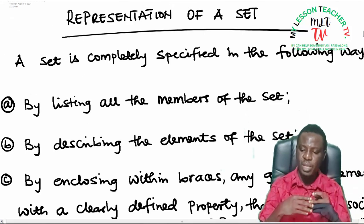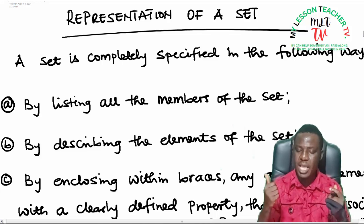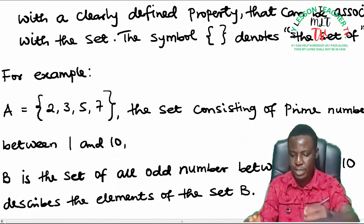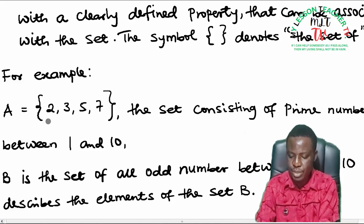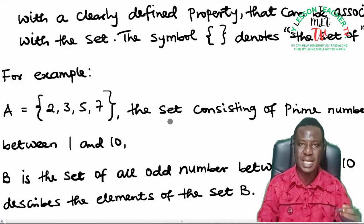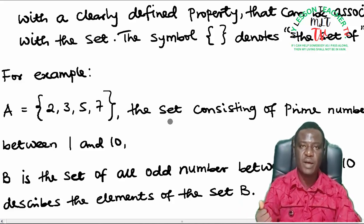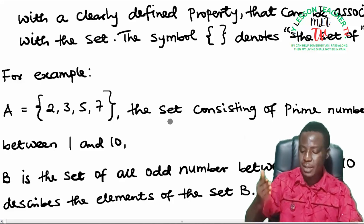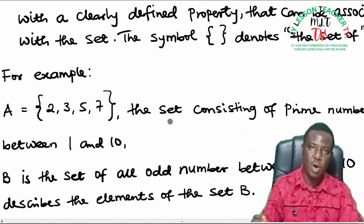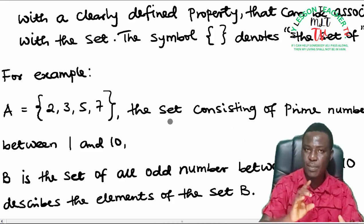On representation of a set, we said a set is completely specified in the following ways. These are ways you can specify a set. A: by listing all the elements of the set. By listing, we can take it for example that A equals braces 2, 3, 5 and 7—the set consisting of prime numbers between 1 and 10. So this is by listing. You can list out all the elements of the set. For example, those of us that graduated from Air Force Secondary School Makurdi in 2006, we can be specified by listing the names of all the students. Upon graduation, we had a booklet where all our names were entered as members of set 2006. So that is an example of listing.